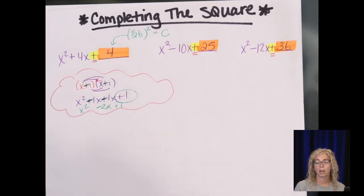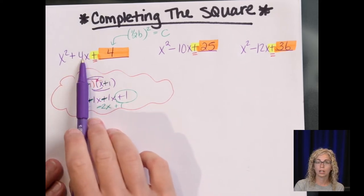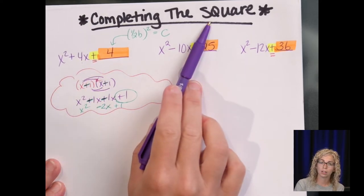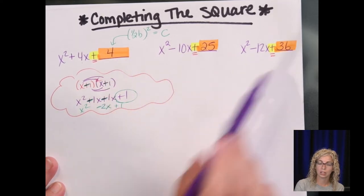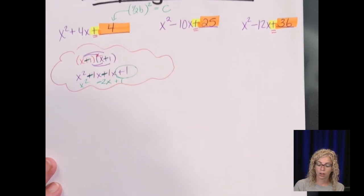It was a binomial to start, and to complete the square, it's the perfect square trinomial, we just completed that trinomial.